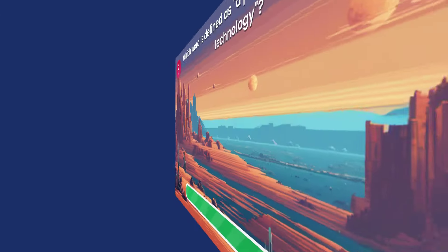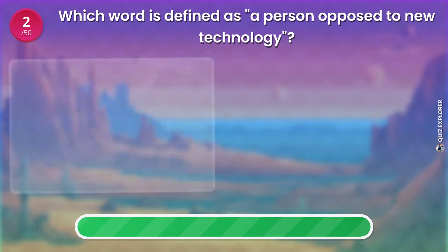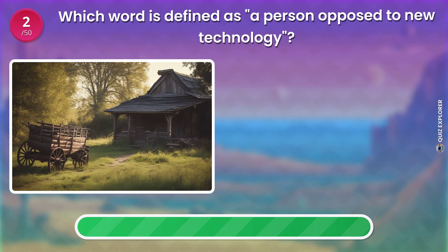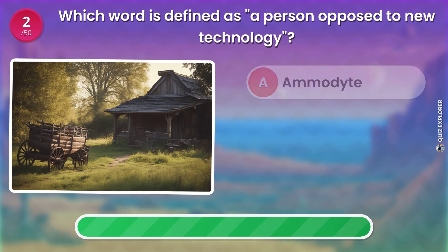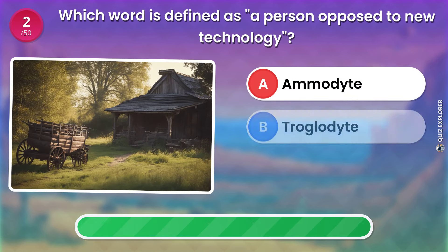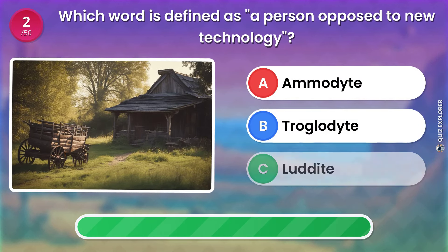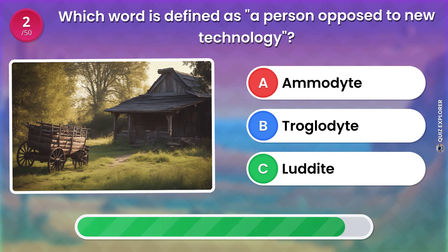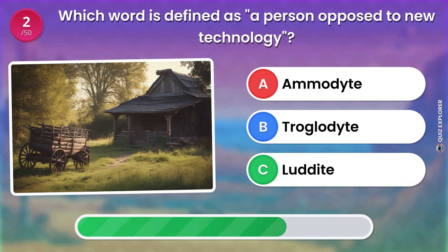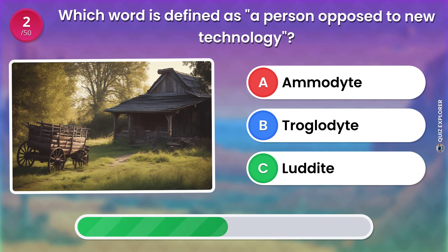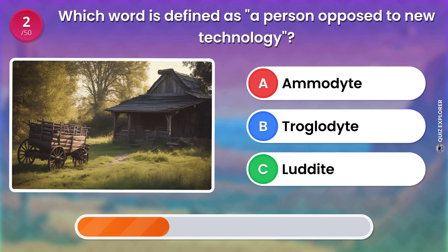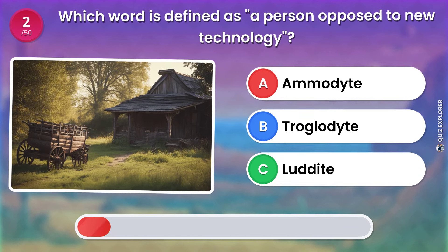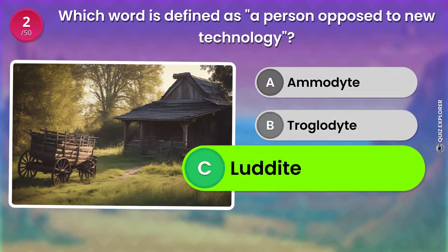Which word is defined as a person opposed to new technology? Amidite. Troglodyte. Luddite. The answer is: Luddite.